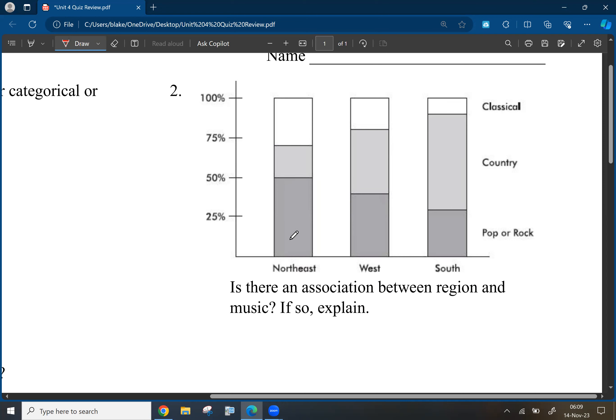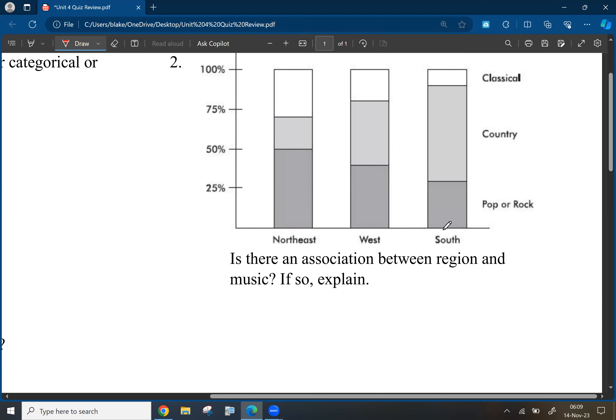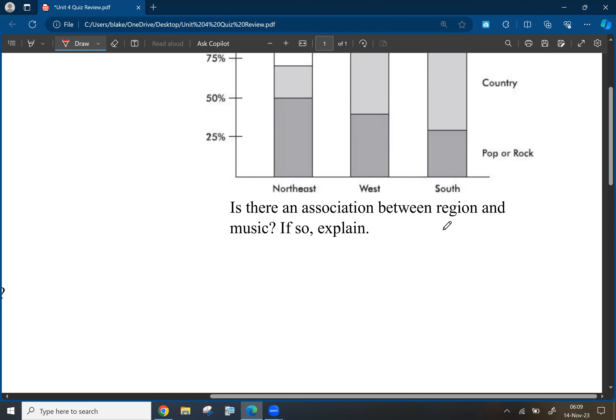Northeast has a lot more pop or rock. West is a little bit more split, 50-50 on like country and rock with a little bit classical. And then south is a lot more country with a lot less pop or rock classical. So basically everything I just said is what I should write. Just kind of stating the obvious, but in word form. So yes, each region has different proportions.